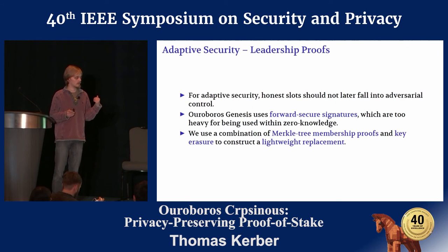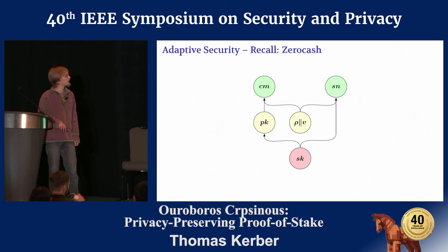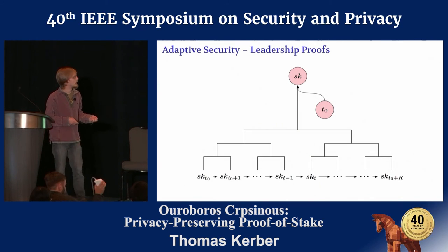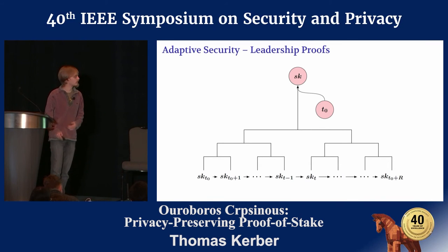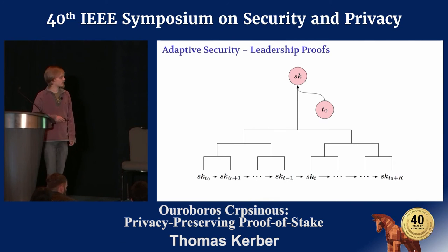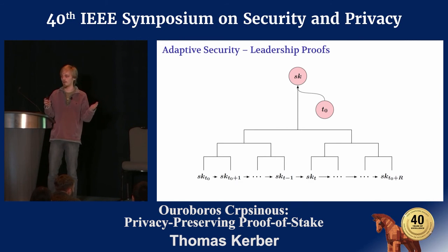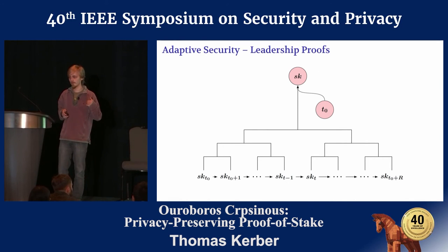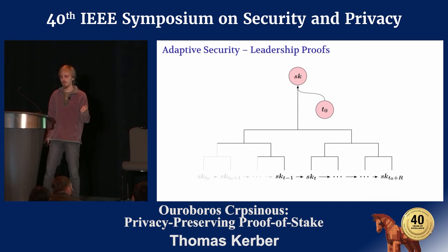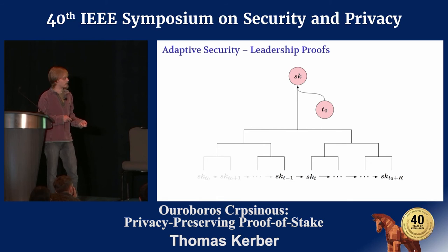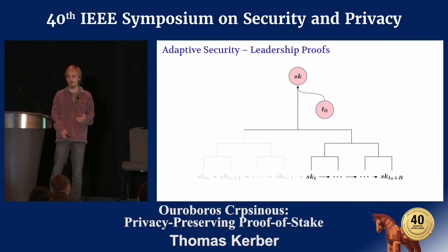Instead, we design a system of Merkle tree proofs and key erasure to replace forward-secure signatures. Recalling the cryptographic items in Zerocash, we split up the secret key: we start at time t₀ where the secret key is generated by random sampling sk_{t₀}, and every subsequent secret key in the tree is deterministically derived from the previous one up until sk_{t₀+r}, where r is a fairly large bound. We create a Merkle tree over these keys, keeping only the keys we still need — at time t−1 we'd only have sk_{t−1} still around. As part of a leadership proof, we prove knowledge of a path in this Merkle tree to the corresponding secret key, then erase it, ensuring no adversary who corrupts us at that point can create a new block with it.